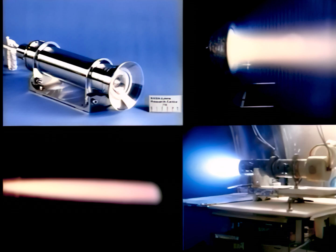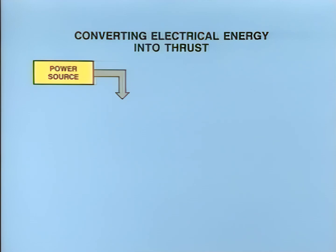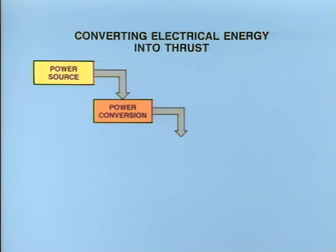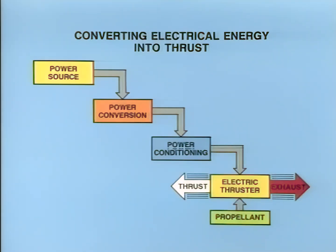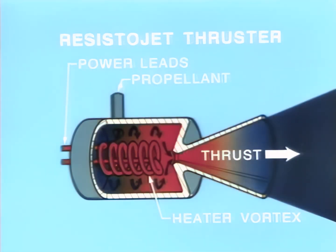Specific electric rockets have very different operating principles, but all electric propulsion systems share many features. Energy is derived from a solar or nuclear power source, converted into electricity, and then conditioned for use by electric rockets, which use the power in various ways to accelerate the propellant to produce thrust. Resistojets, the simplest electric rockets, add energy to a propellant via heat transfer from an electrically heated resistor.